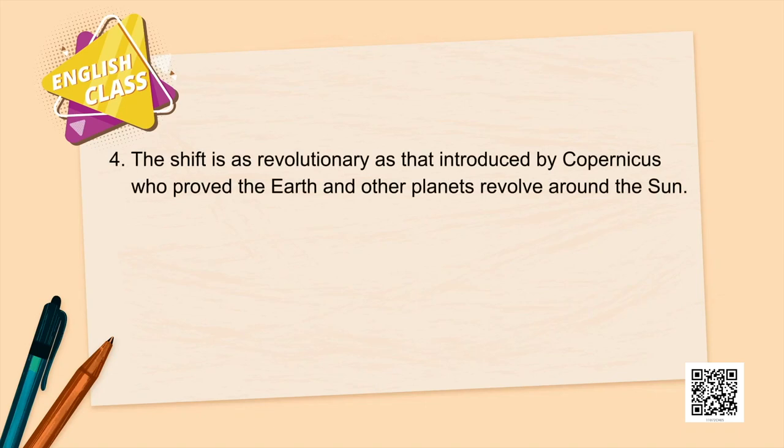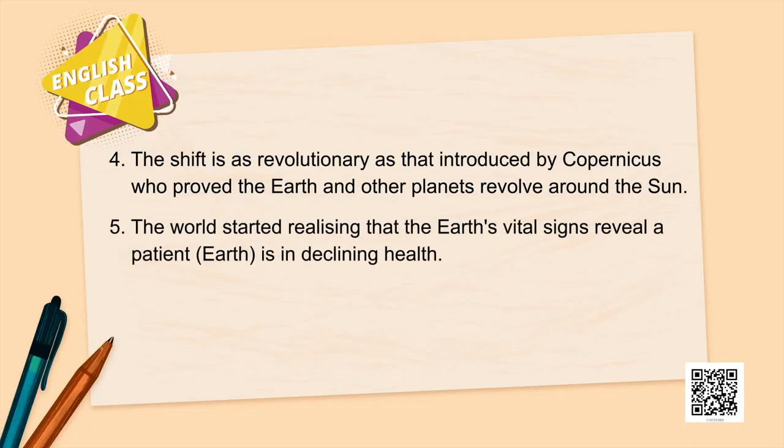The mechanistic view was: 'this is happening here and there, it is not a big deal.' But people started looking at things holistically. The world started realizing that the Earth's vital signs reveal a patient in declining health. The patient is planet Earth. When you observe data from agriculture, forestry, fishery, and industry around the world, it proves that the very planet you are living on is ailing. The concept of sustainable development was popularized in 1987 by the World Commission on Environment.